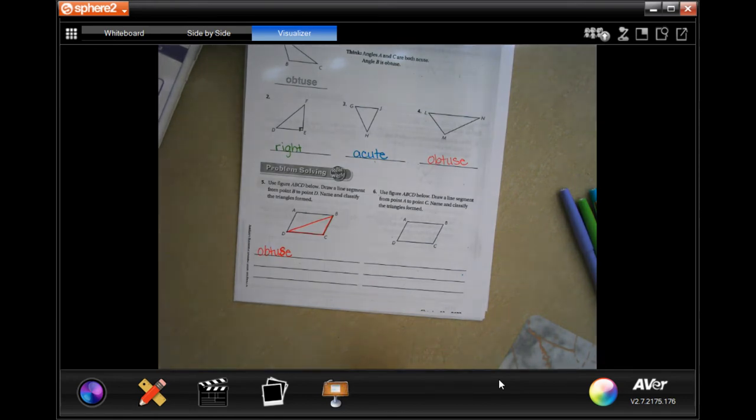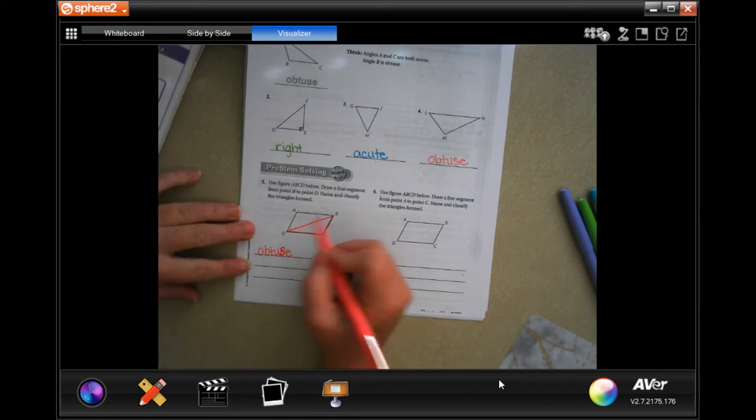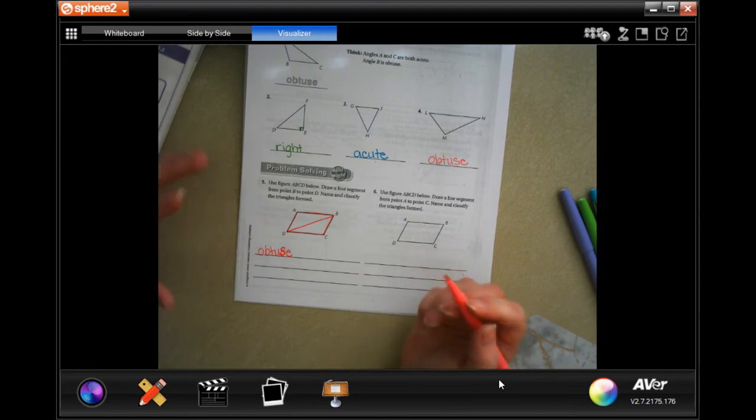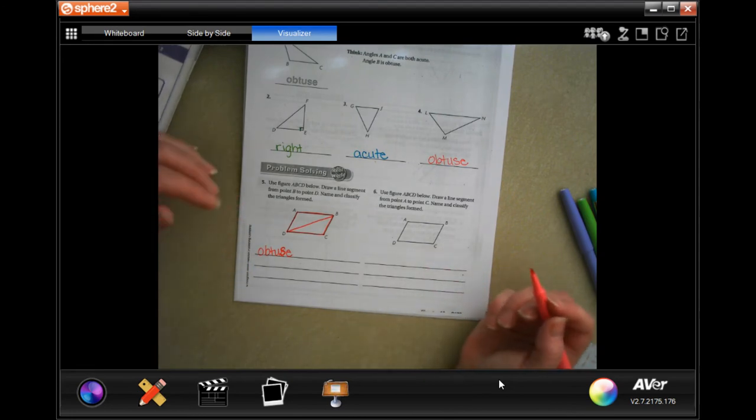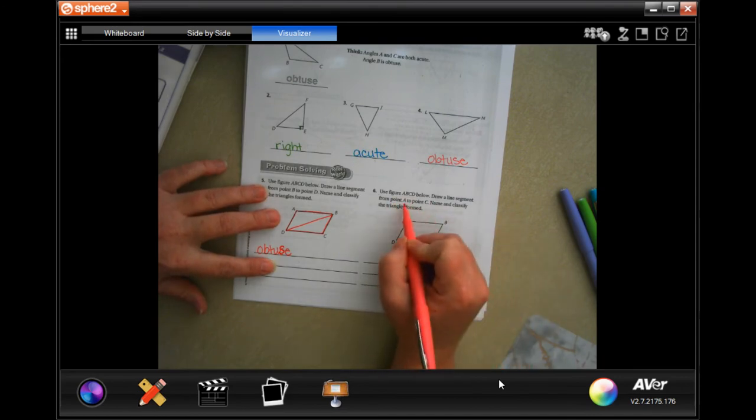Yes, so they are both obtuse triangles. They are mirrors of each other, so they are both obtuse.